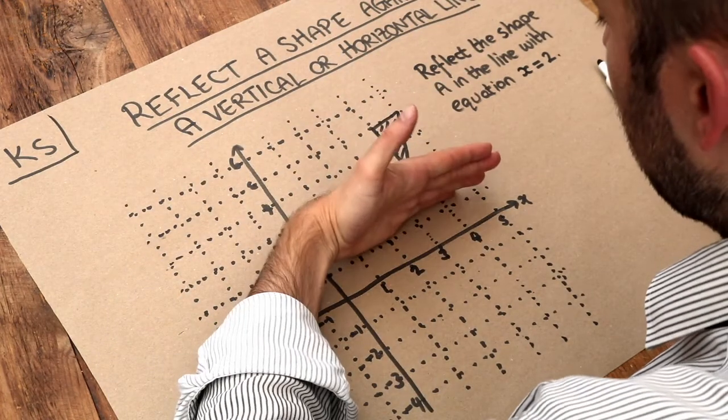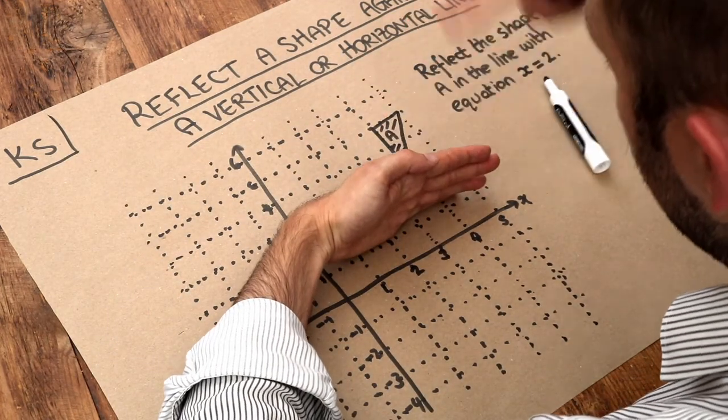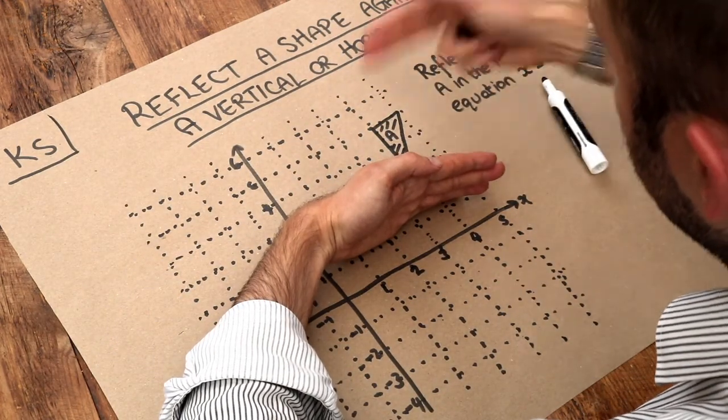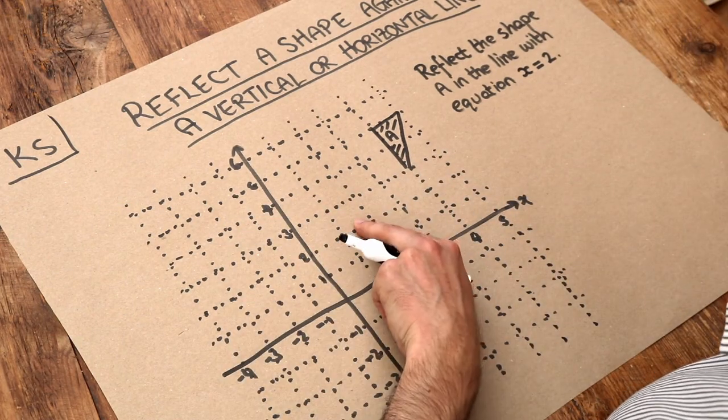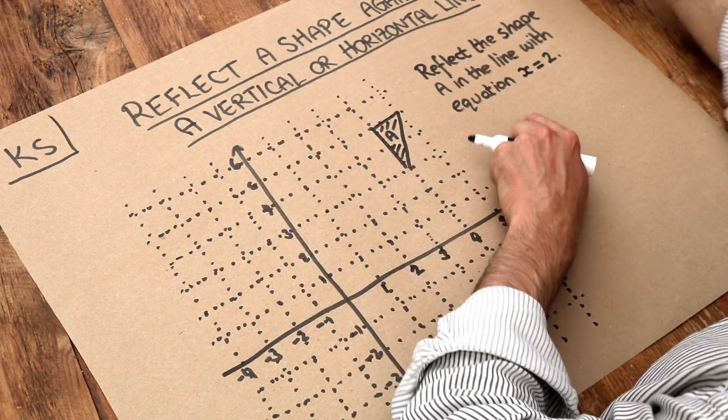So I could, for example, give a line like this and then reflect that shape in that line of reflection like this, so it flips over. And it might be the line is drawn for you, but it might be that you're given the equation of the line.